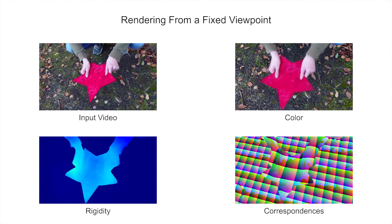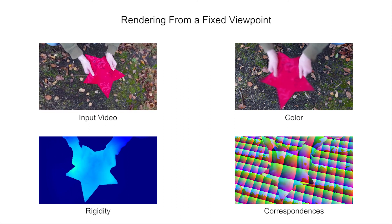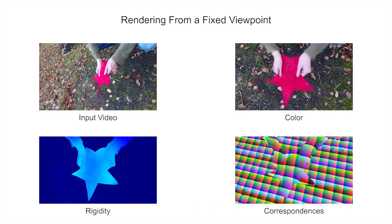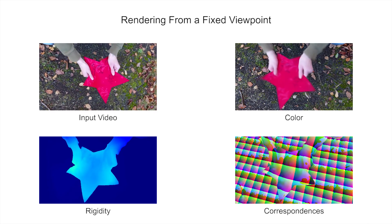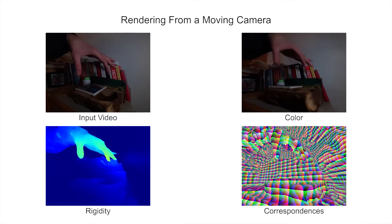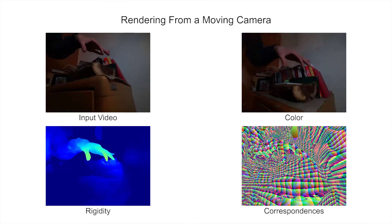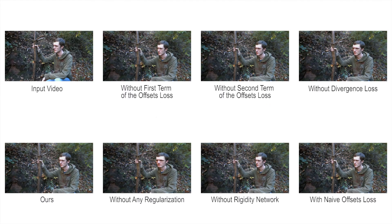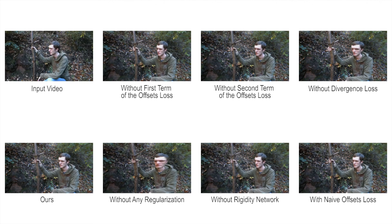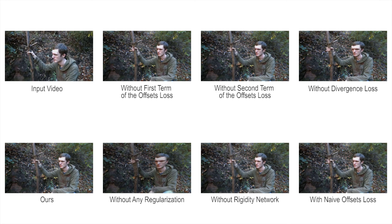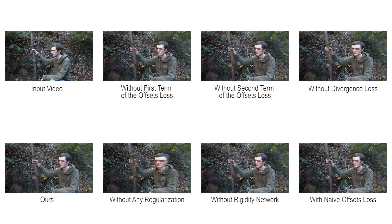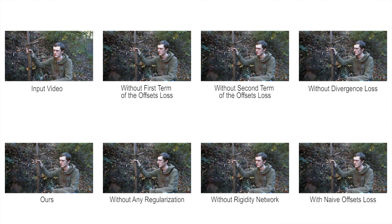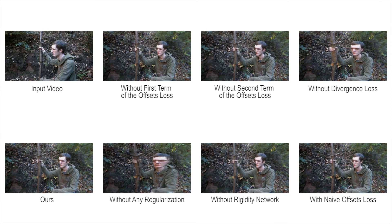Our method estimates rigidity scores of every point in space as well as dense correspondences without any direct supervision. The correspondences are the 3D positions in the canonical volume after ray-bending. While we can formulate ray-bending without the rigidity network and train without regularization, the resulting representation can only reconstruct the input images but shows artifacts for novel views. We show that our proposed regularization losses are useful in stabilizing the foreground and the background, and that both the rigidity network and our offset loss improve results.